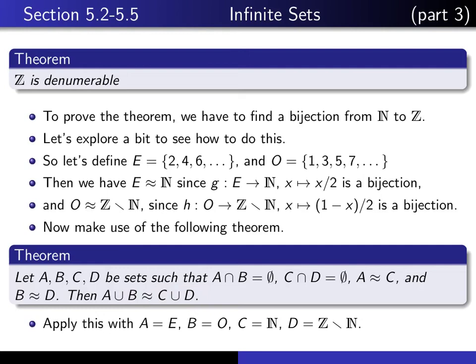We're going to apply this theorem where we replace A by the set of even natural numbers, B by the set of odd natural numbers, C is the set of natural numbers, and D is the complement in the set of integers of the set of natural numbers, and then we get exactly what we want. That gives us exactly the theorem that Z is denumerable. That's the idea of the proof.